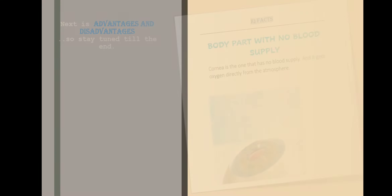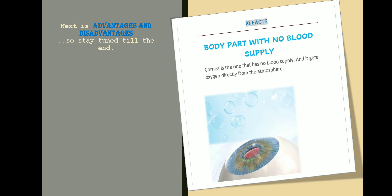Today's IQ fact: the body part with no blood supply is the cornea — it gets oxygen directly from the atmosphere. The cornea is a part of your eye where no blood vessels are present. Since blood carries oxygen via hemoglobin and RBCs, and there are no blood vessels in the cornea, it consumes oxygen directly from the atmosphere.